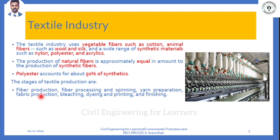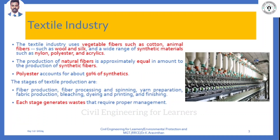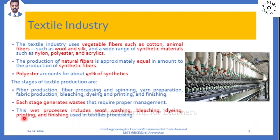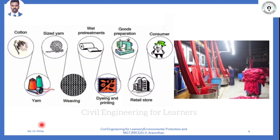Fabric production is the next stage, followed by bleaching, dyeing, and finishing. From the textile industry, waste comes from each of these processes. The next important stage is wet processing, which includes wool washing, bleaching, dyeing, printing, and finishing. These are the places where the major textile waste is generated.